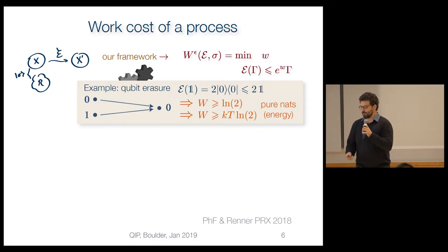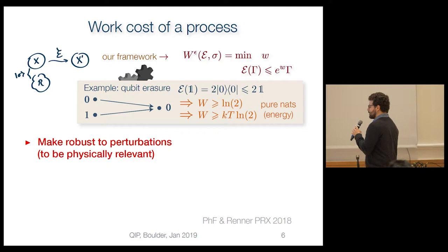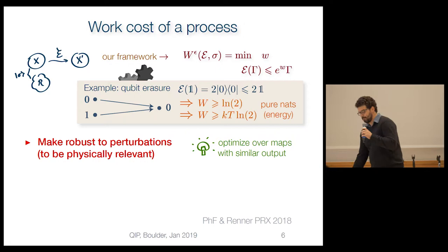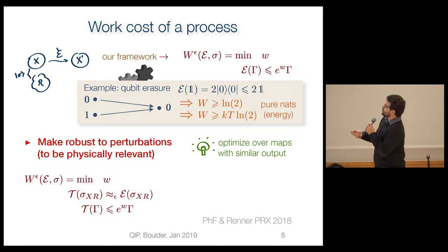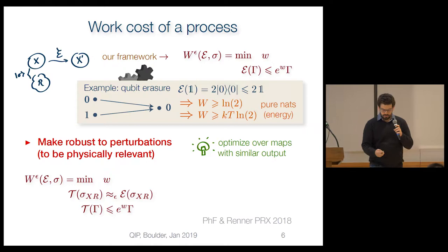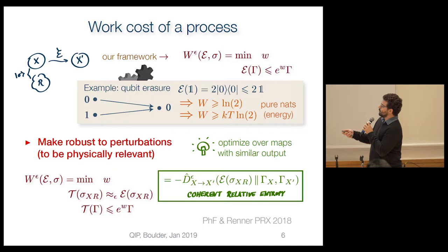This exact result isn't physically relevant for larger system sizes because it's not robust to perturbations. So we do the standard trick in information theory: optimize over processes that are epsilon-close to the one we want to carry out on a given input state sigma. We optimize over channels T whose result, when acting on this input state and its purification, is epsilon-close to the ideal version. Doing that gives a new quantity we call the coherent relative entropy, relating the work cost to information-theoretic measures.